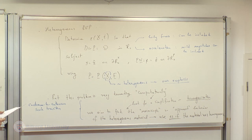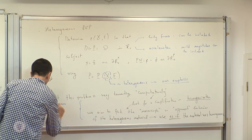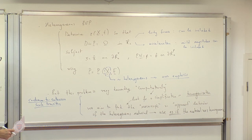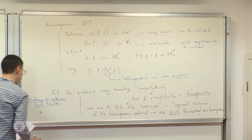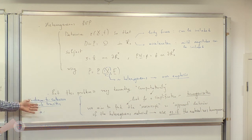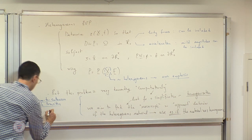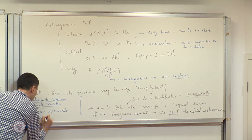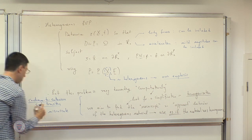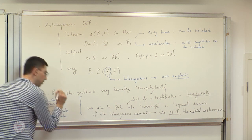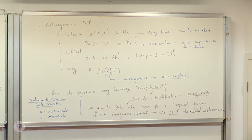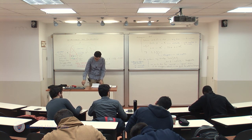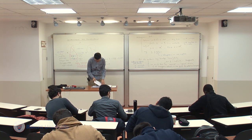I'll introduce a notation for subsequent derivations. A quantity without any special notation refers to the microscale. If I put a bar on it, it means it's the macroscale counterpart of the same entity. What a bar exactly means is something we will define — it just refers to the macroscale. Now we have the idea; we must construct the details of this concept called homogenization.